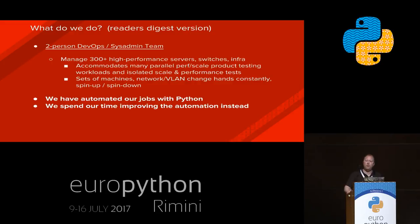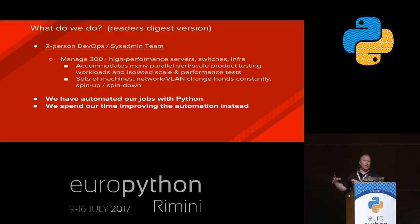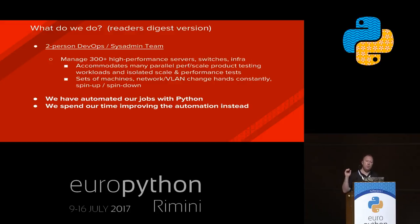The Reader's Digest version: we manage 300 or so high-performance servers and switches in a large infrastructure. This infrastructure accommodates parallel product testing, comprised of isolated sets of machines we refer to as clouds. With Quads, we've basically automated our entire jobs. Instead of spending time being network engineers or systems folks deploying servers, we've automated all of this with Python, and we instead spend our time improving the automation.